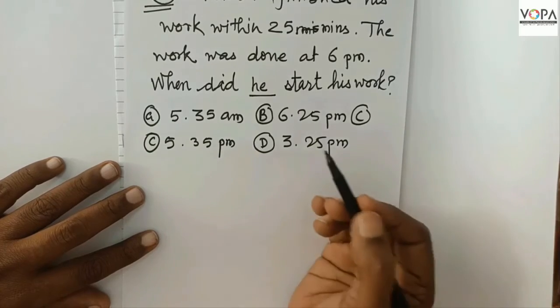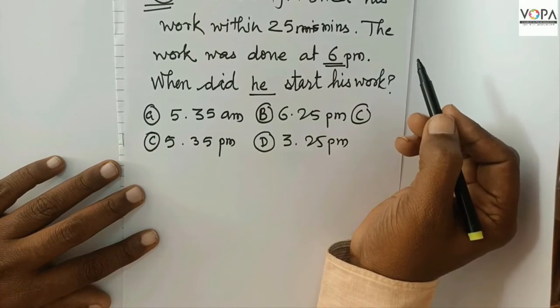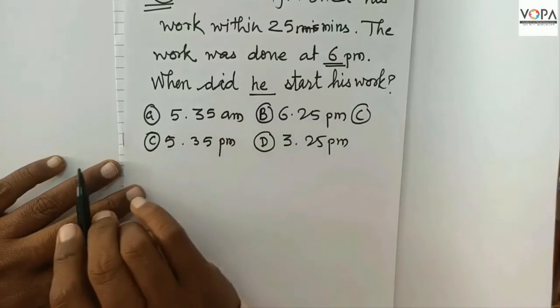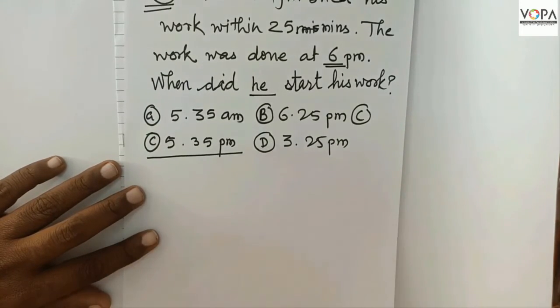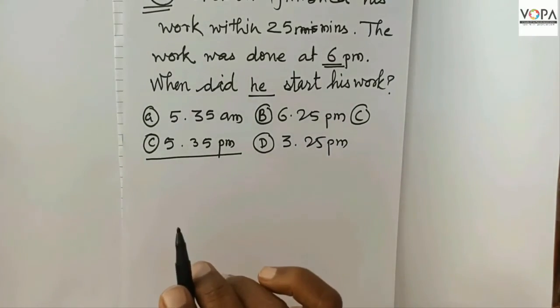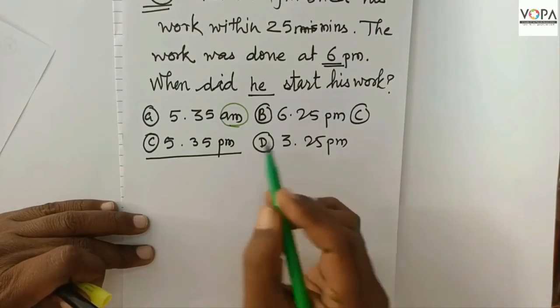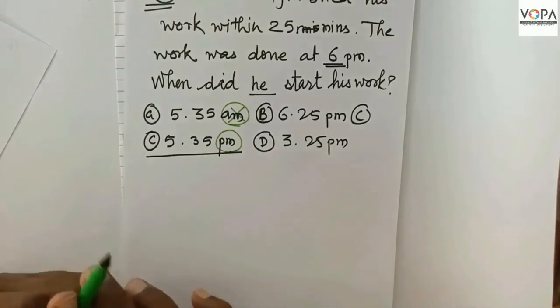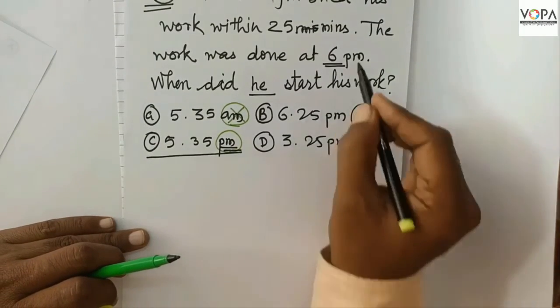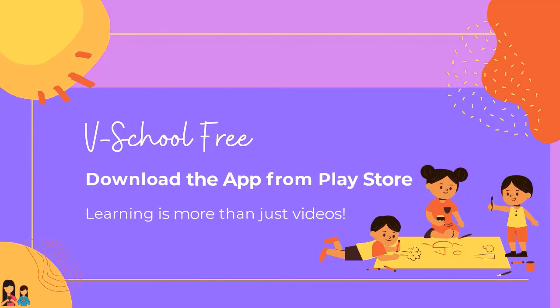For that, we have to go back from this 6 PM. So if we go back 25 minutes, the answer is 5:35 PM. Observe very carefully. When the answer is there, we can jumble with AM or PM. So we shouldn't tick on AM. We have to go with PM. Why? Because here is PM.